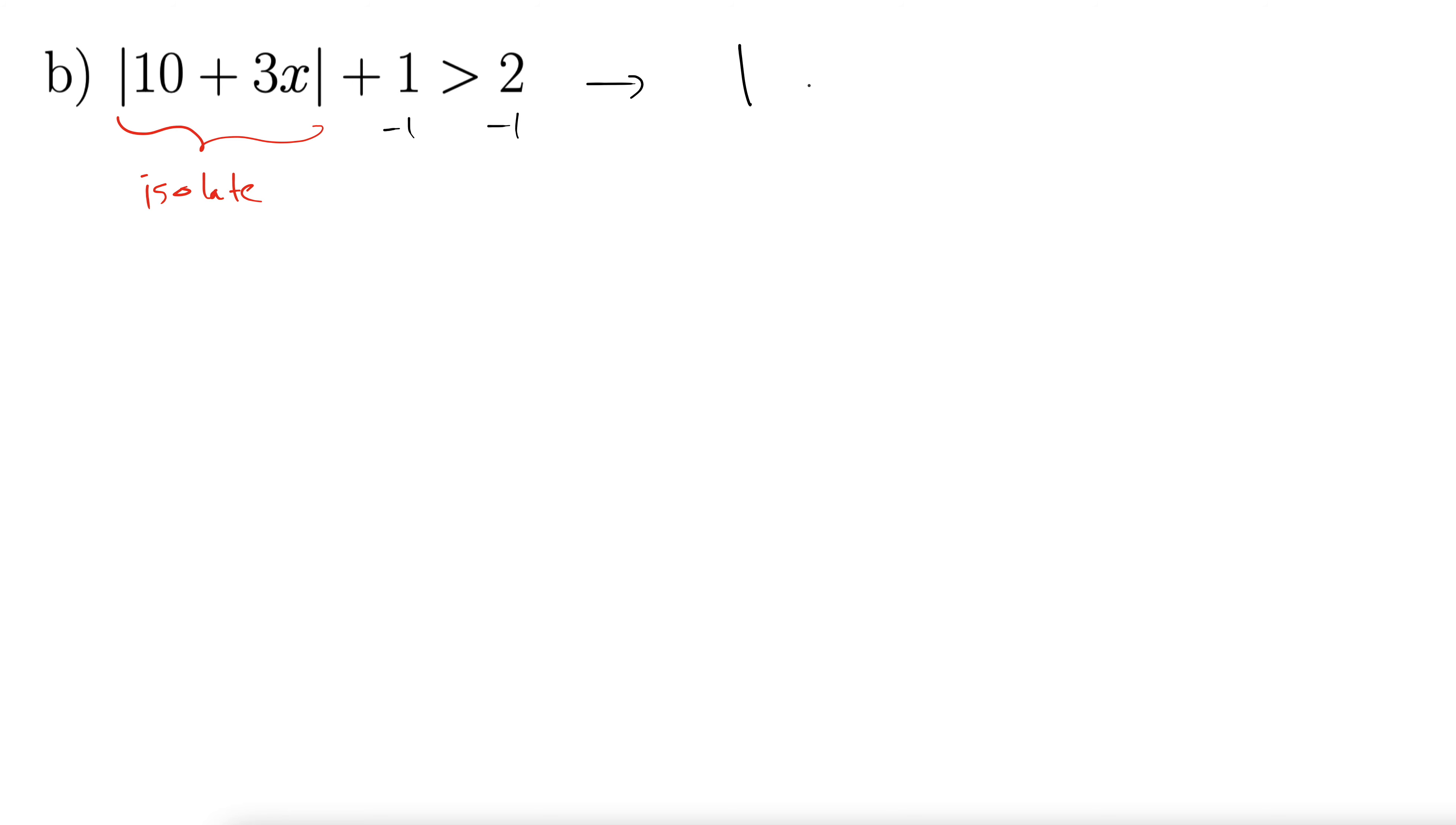Okay, so I'm going to subtract 1 from both sides. That gives us absolute value of 10 plus 3x greater than 1. So now we use more means or. So this is greater than, which is kind of, you can think of it as more than. It just helps us remember this. More means or.